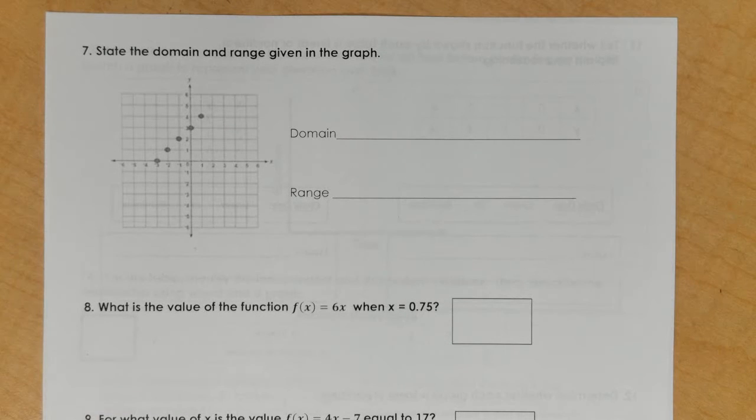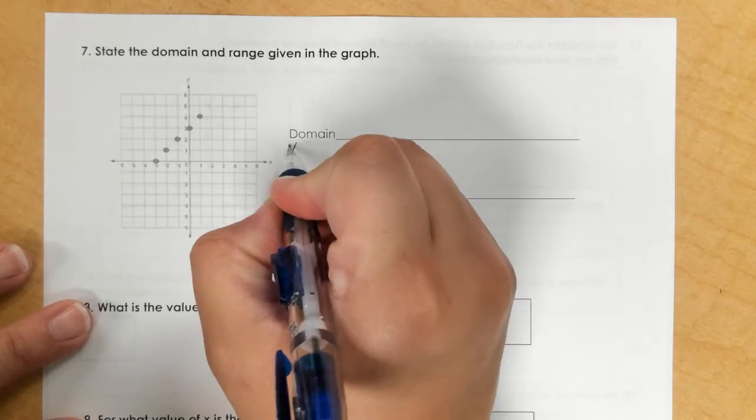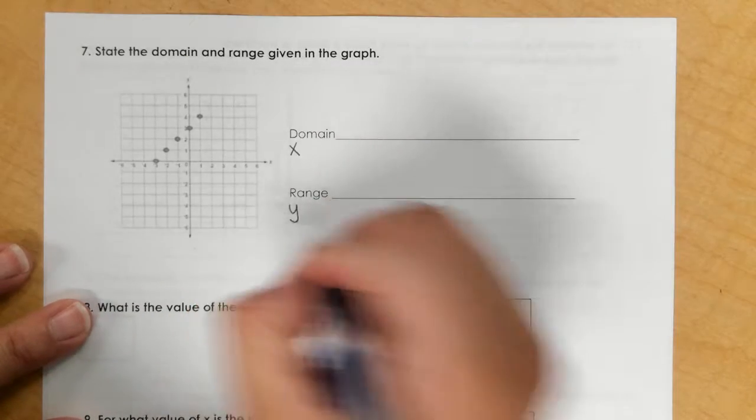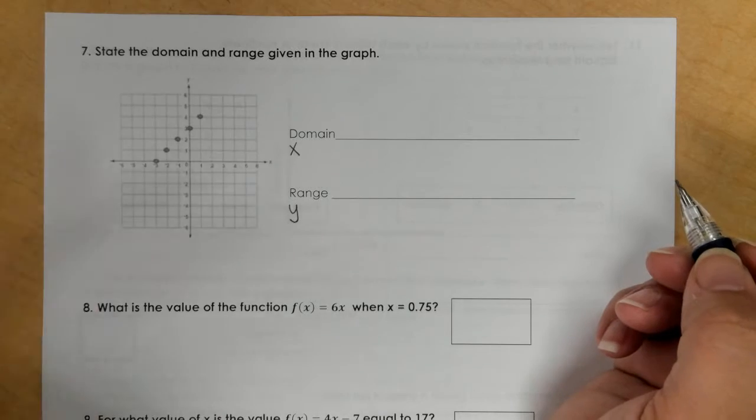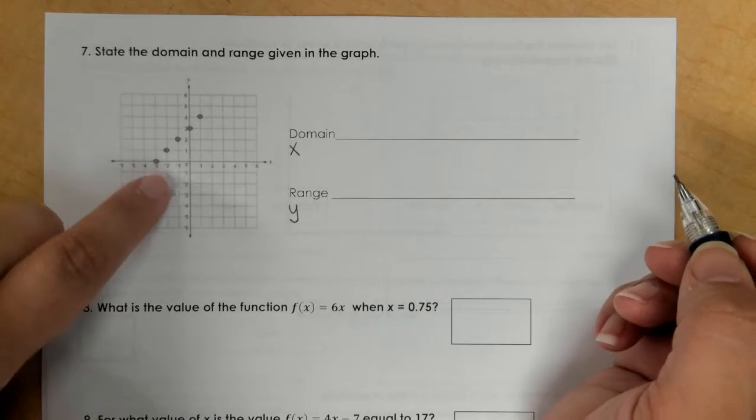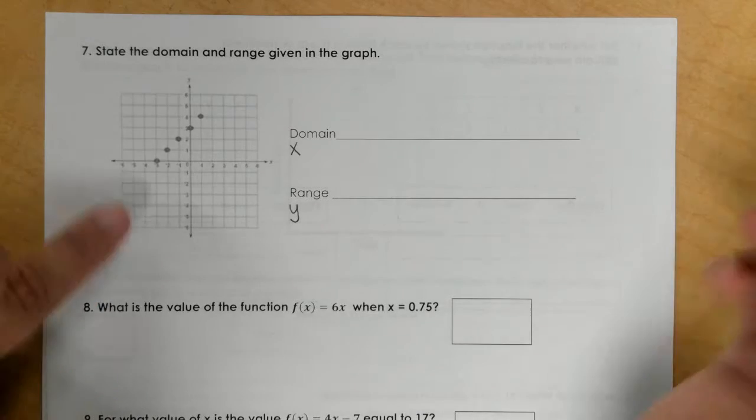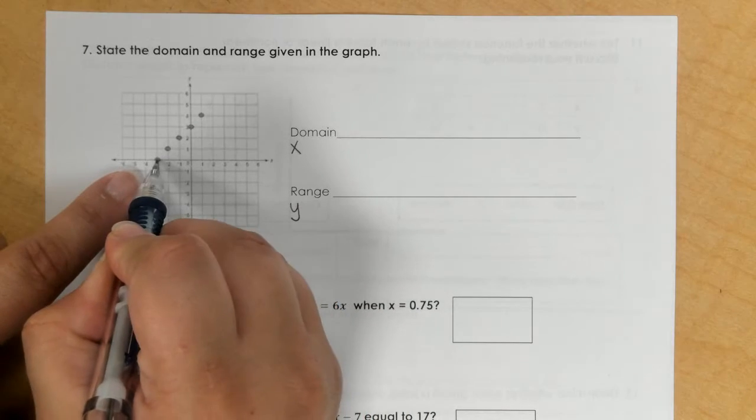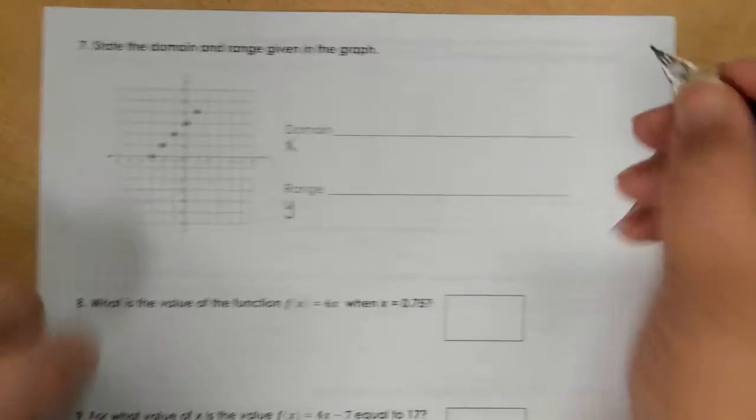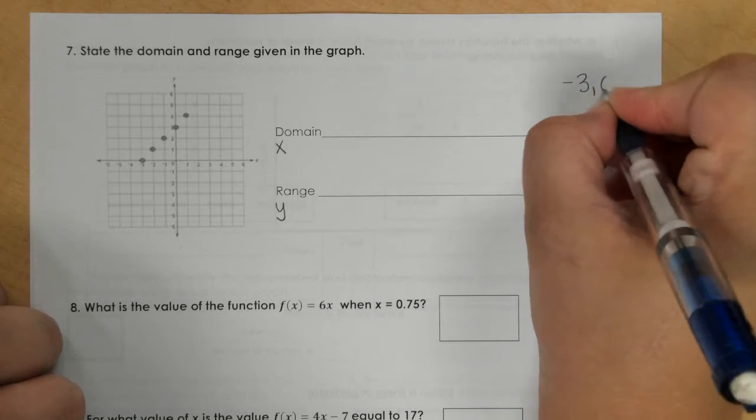For number 7, it says state the domain and the range given the graph. Your domain is your x values and the range is your y values. The first thing I want to do is write all my ordered pairs. I could list them here, on the side, whatever works for you. So this first point would be negative 3, 0.